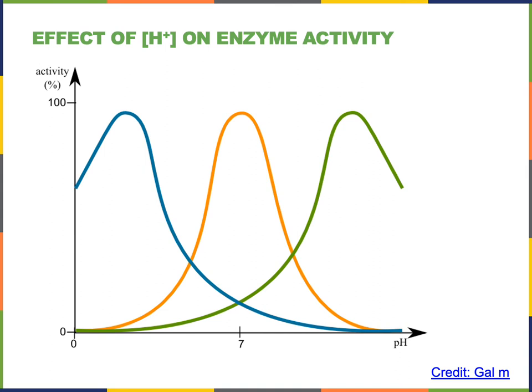The concentration of hydrogen ions in the environment of an enzyme will also influence the enzyme's activity. Enzymes will have the highest activity at an optimal pH, and if the environmental pH is lower or greater than the optimal pH, the enzyme activity will decrease.